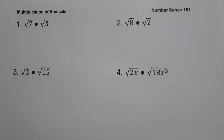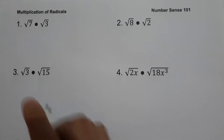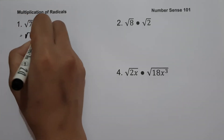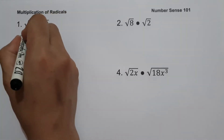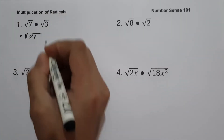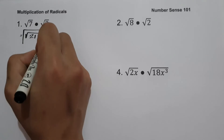On example number one we have square root of 7 multiplied by square root of 3. In multiplying radicals, always remember we can only multiply radicals if we have the same index. Since we have the same index, all we have to do is copy the index and the radical sign and multiply 7 times 3, which gives us 21, and this will be our answer.